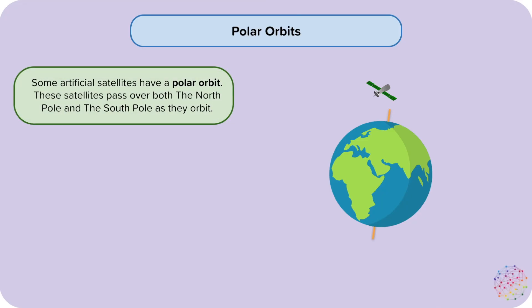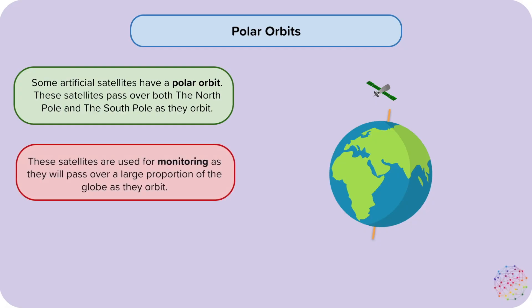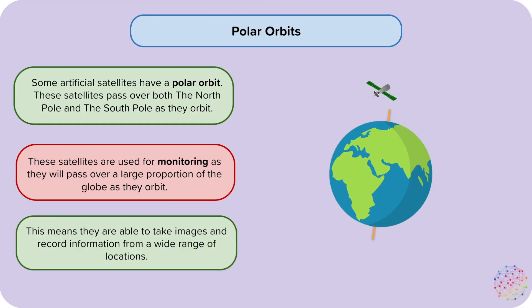Some artificial satellites have a polar orbit. These satellites pass over both the North Pole and the South Pole as they orbit. These satellites are used for monitoring as they will pass over a large proportion of the globe as they orbit. This means they are able to take images and record information from a wide range of locations. Please note that the Earth is also spinning beneath the satellites.